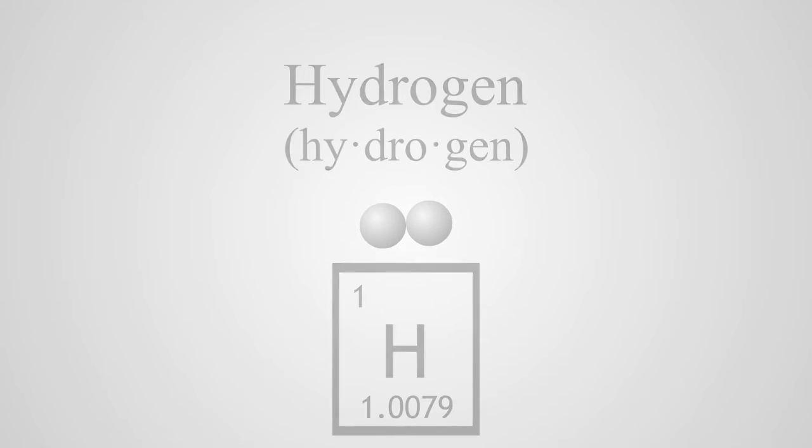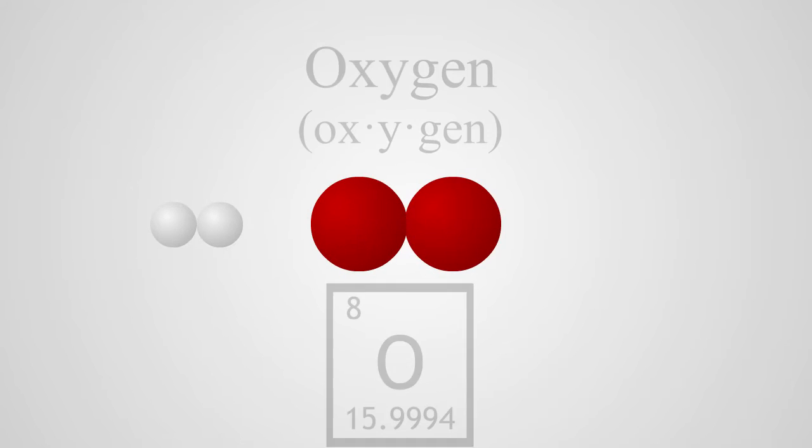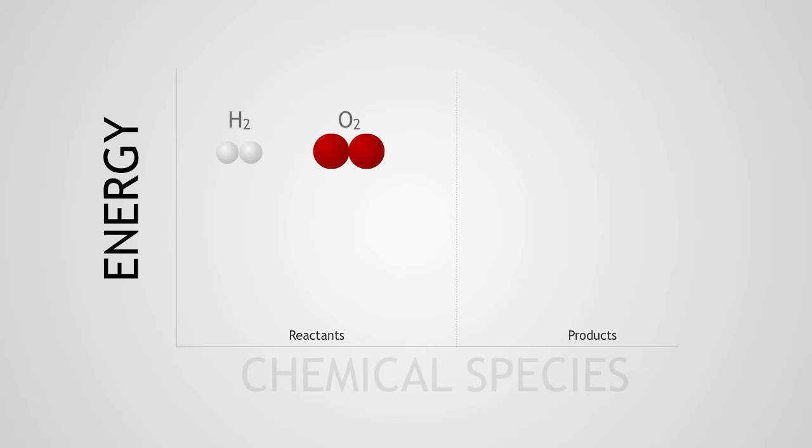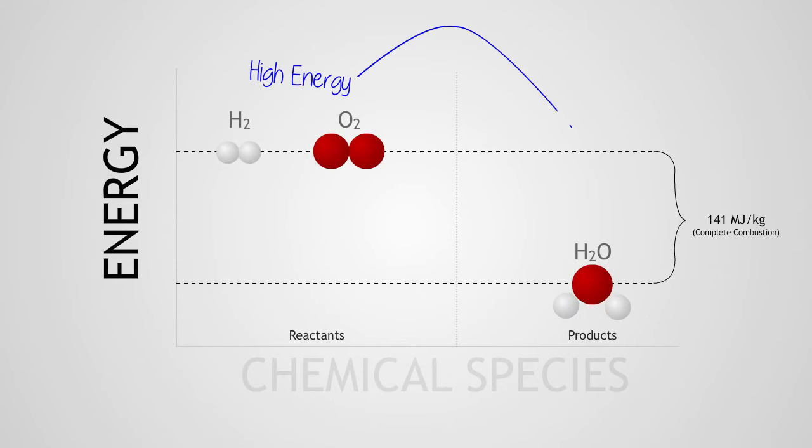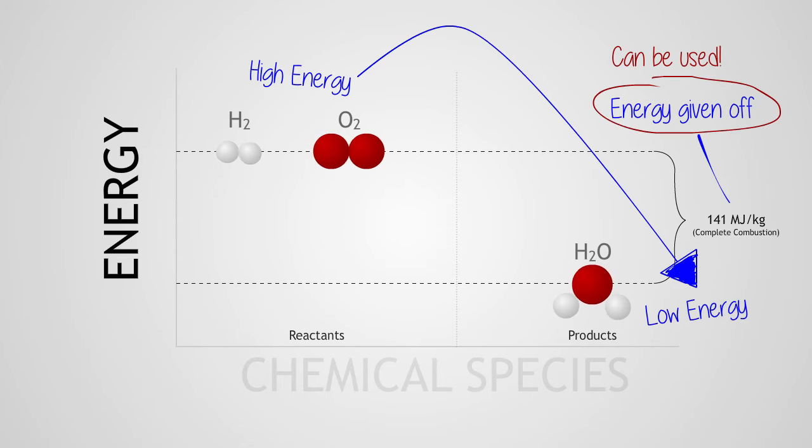This is hydrogen and this is oxygen. Under the right conditions, these two molecules will react to form water. This reaction is very exothermic, meaning it gives off energy. Some of this energy can be utilized as electrical energy through a device called a fuel cell. Let me show you how it works.